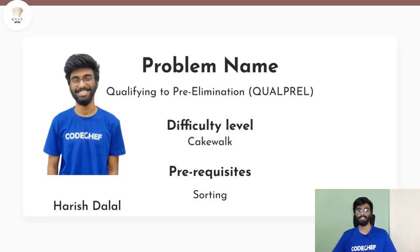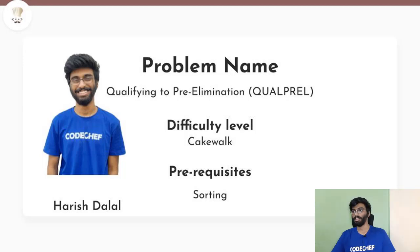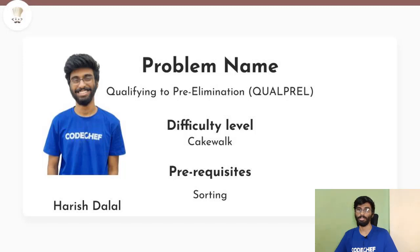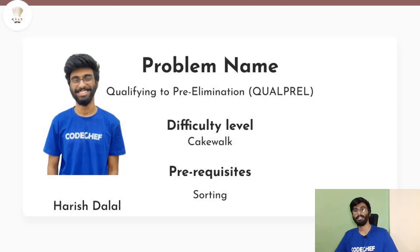Hey everyone, this is Harish Dalal and welcome to our channel Code Chef. The problem we'll be solving today is 'Qualifying to Pre-Elimination'. It is a cakewalk problem; the prerequisite is sorting. This problem is taken from past Snackdown round — Snackdown 2019 Online Qualifier — and the problem code is QUALP REL.